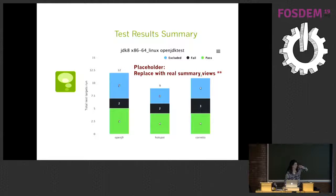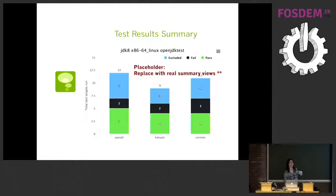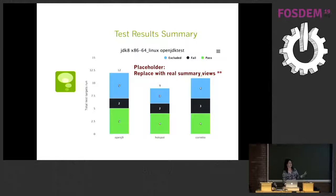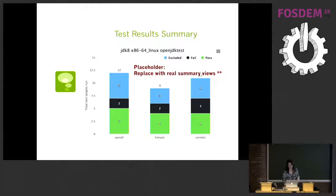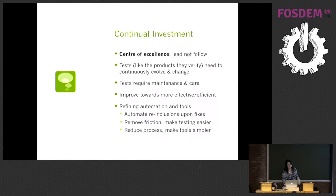We're also working on a test results summary service so the community can see aggregated test results across all implementations, platforms, and versions. They can see, for instance, that AdoptOpenJDK ran 65,000 tests, how many passed, how many didn't pass, and how many were excluded — with the ability to drill down from that summarized view.